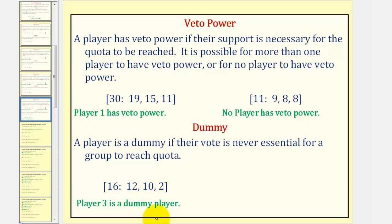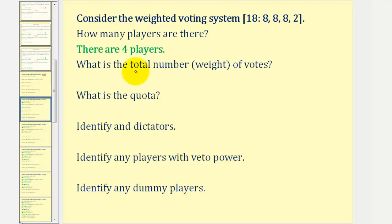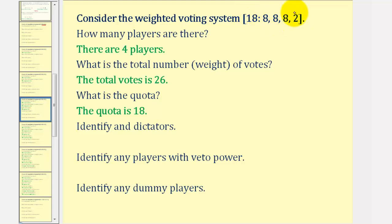Now let's take a look at some examples to review all these concepts. Consider the following weighted voting system. We're first asked how many players there are — there would be four players. Next, what is the total number of votes or weight? That would be eight plus eight plus eight plus two, which is 26, so there's a total of 26 votes. The quota would be 18. Now, notice how none of the weights are greater than or equal to the quota of 18, and therefore no players are dictators.